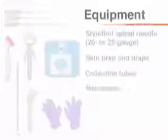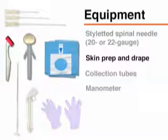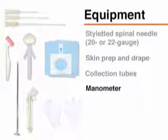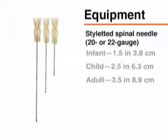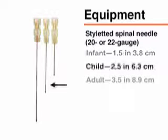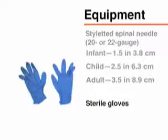Before performing the lumbar puncture, you will need a commercially available tray containing the necessary supplies: a spinal needle with a stylet, equipment for skin preparation, drapes, collection tubes, and in some cases a manometer. Typically, a 20 to 22 gauge needle is used, with length ranging from 1.5 inches (3.8 cm) for infants to 2.5 inches (6.3 cm) for children and 3.5 inches (8.9 cm) for adults. You will also need sterile gloves.